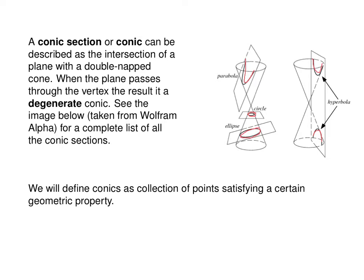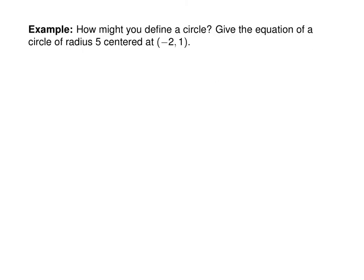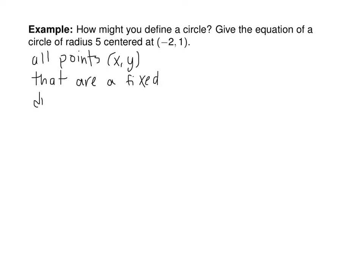We are going to define conic sections that satisfy a certain geometric property. The best way to illustrate that is with a circle — that's the easiest example. A circle is all points x, y that are a fixed distance r from a center point h, k.